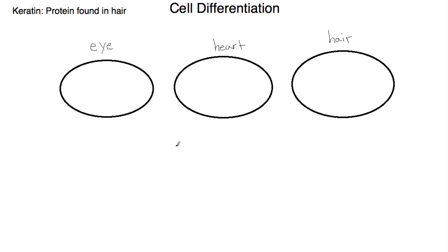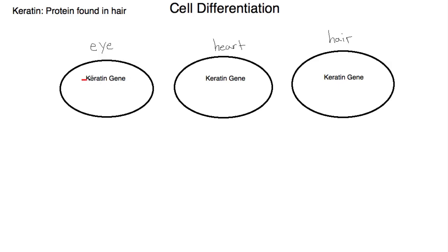Let's take a real-life example which you can use in your exams. Keratin is a protein found in hair, and it affects the structure of hair. Remember that each one of our cells contains the keratin gene, but not all of our cells will express this gene. In our eye cell, the keratin gene will not be expressed, and so our eye cell will not produce the protein keratin.